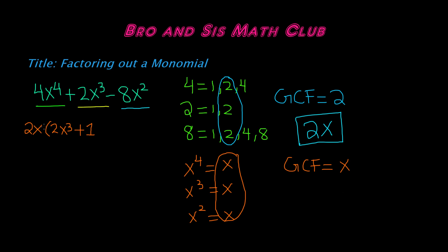And then x to the 3rd divided by x. x to the power of 3 minus x to the power of 1 is going to give you x to the power of 2, or x squared.